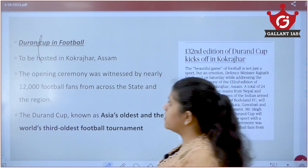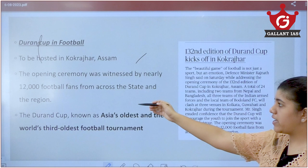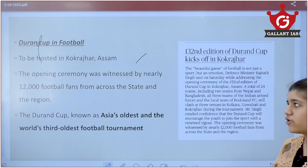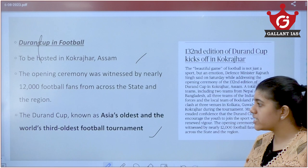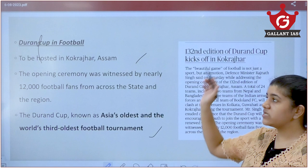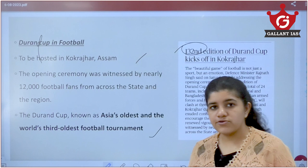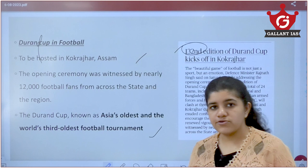The Durand Cup is Asia's oldest and the world's third oldest football tournament. Its 132nd edition will be held in Assam this year, with an opening ceremony witnessed by about 12,000 footballers. That concludes today's session covering three to four main topics and seven to eight prelims topics. The PDF is available on the Telegram channel GAN Current Affairs.